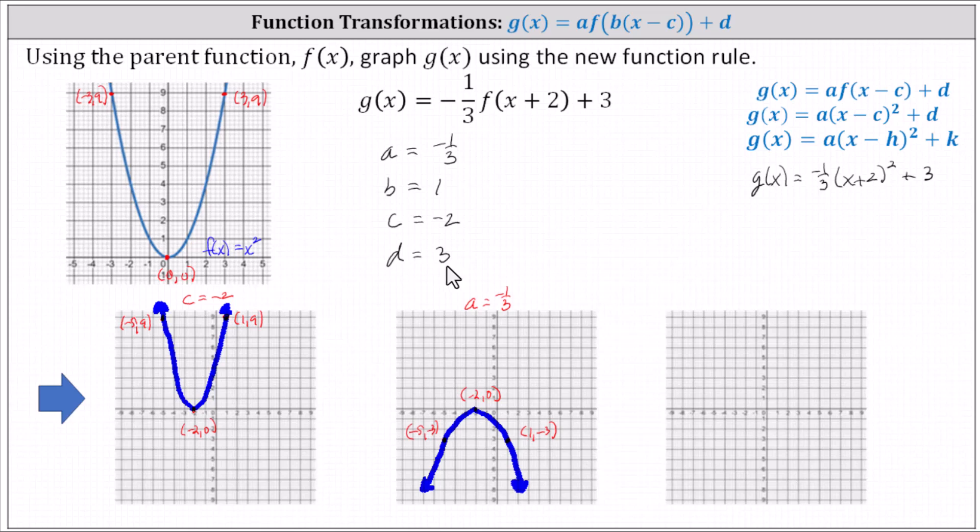We now add three to each of the y coordinates of these three key points. Again, starting at the vertex, zero plus three is three. The vertex is now negative two comma three. Adding three to the y value of the point negative five comma negative three, negative three plus three is zero. The ordered pair is now negative five comma zero.